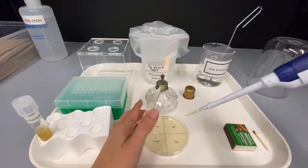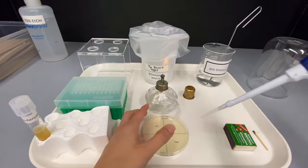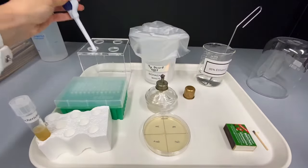Lift the lid, put your tip near the centre of the plate, then push the plunger down to expel the bacteria. Discard the tip in the waste container and then put your pipette back in the rack.